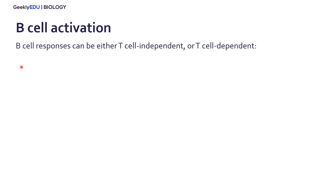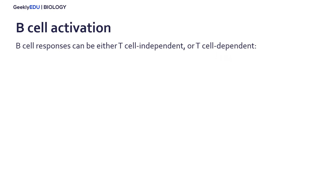B cell responses can take two different main forms: the first can be independent of T cells, or they can also work with T cells to have a response. The T cell independent response starts with the B cell binding to an antigen directly. It's important to note that while these B cells can bind to antigens, it's only a certain type of antigen they're able to bind with — antigens that are not made out of proteins, but out of other molecules such as polysaccharides, so made out of sugars.